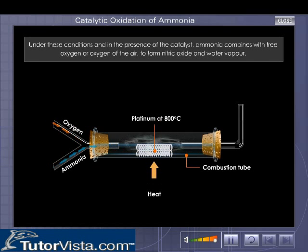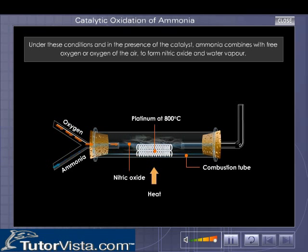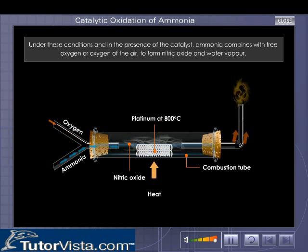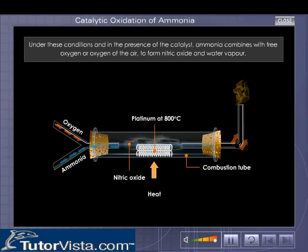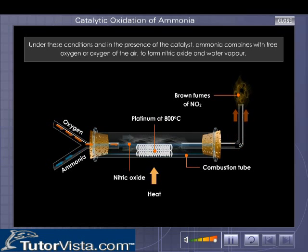Under these conditions, ammonia combines with oxygen to form nitric oxide and water vapor. As nitric oxide, or nitrogen monoxide, which is colorless, comes out into the air, it cools down and combines with the oxygen of the air to form reddish-brown fumes of nitrogen dioxide.